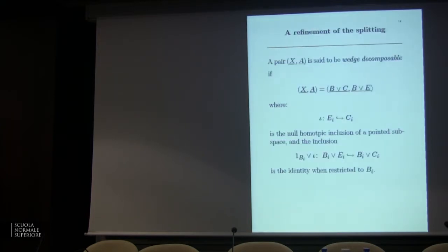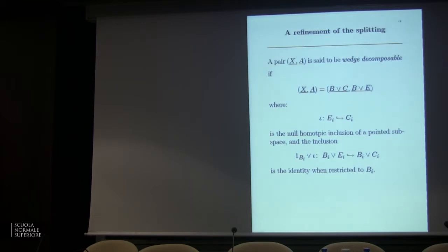I want to refine the splitting. I'm going to consider pairs which are wedge decomposable: X is a wedge of two spaces B and C, A is a wedge of B and E, the inclusion of E_i into C_i is null homotopic, and the inclusion is the identity on B_i. Such a pair (X,A) is called wedge decomposable. The smash product distributes over the wedge, so there is something useful to say here.